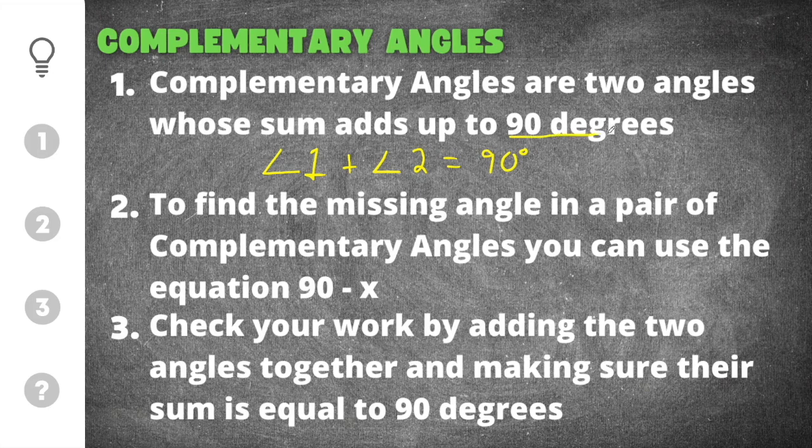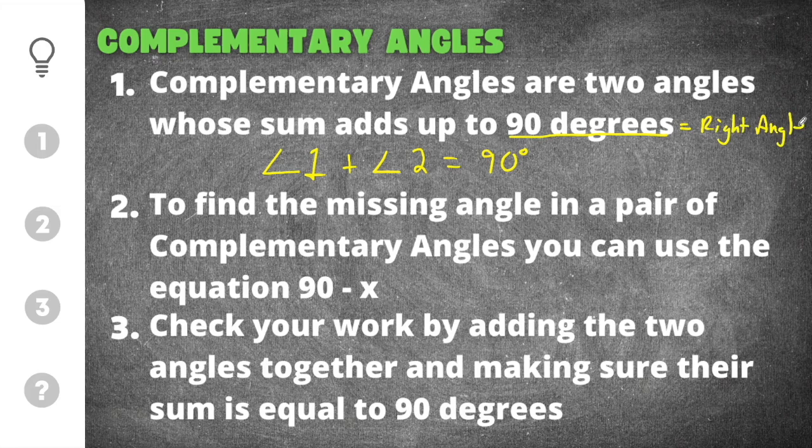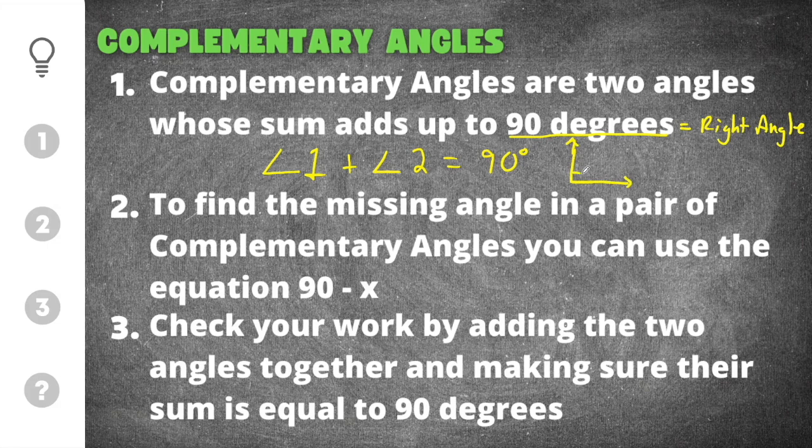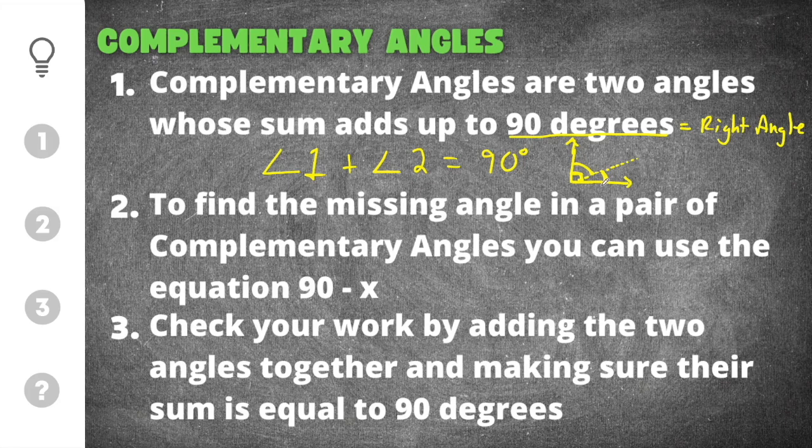Another way of saying this is that the two angles will form a right angle. So for example, if you have complementary angles, they will typically look like this. They'll have the little right angle symbol and there will be a little dotted line that indicates that there's two angles here, but the two angles added together will equal 90 degrees, which is a right angle.